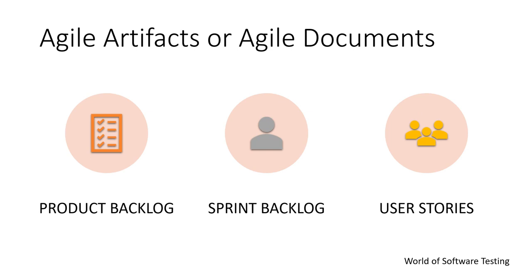First we will cover the agile artifacts or documents, which are the product backlog, sprint backlog, and user stories. Basically, the artifacts allow everyone on the team to review and adopt the work from the same information base — that is the purpose of agile artifacts.